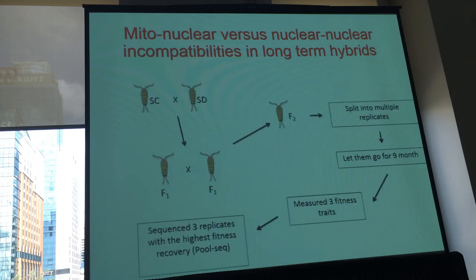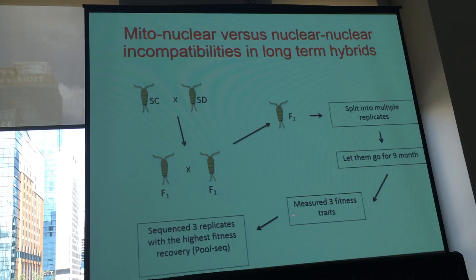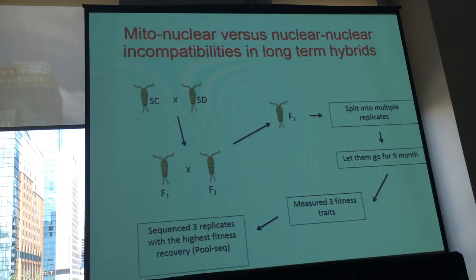So we were interested in looking at the importance of these two kinds of incompatibilities when you do recreate these homozygote-homozygote genotypes that could expose nuclear-nuclear incompatibilities. The way we did this: we crossed the two populations, got F1 hybrids, crossed them to get F2 hybrids, then split them into multiple replicates and let these replicates go for nine months. After nine months, we measured three fitness traits — two associated with viability and one fecundity — and chose three replicates for each reciprocal cross with the highest fitness recovery across all three measurements. We then sequenced pools of about 300 individuals per replicate.